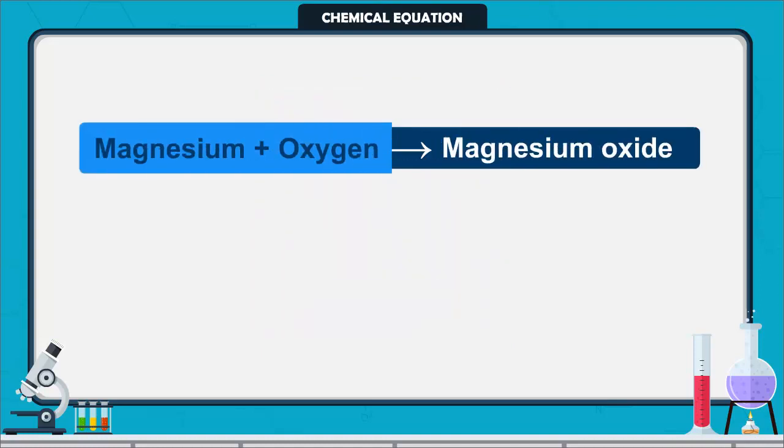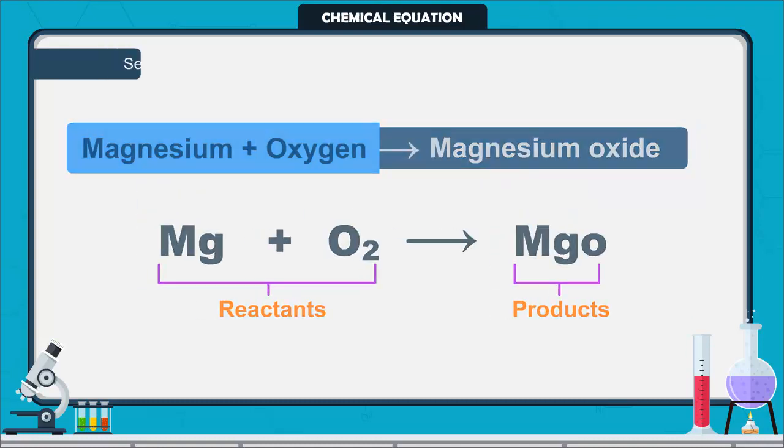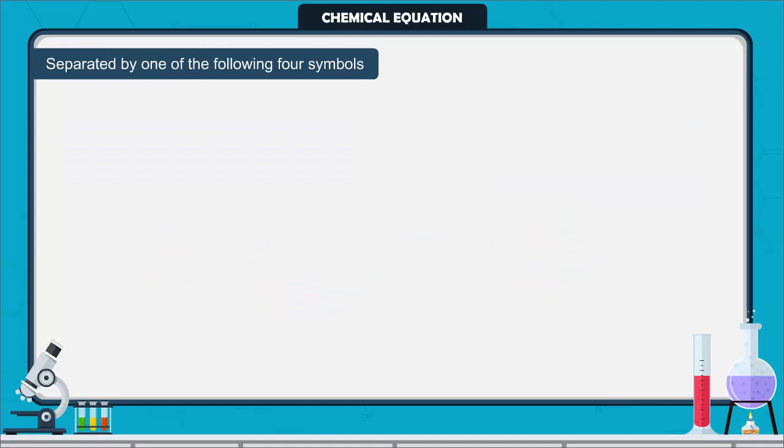If you recall formulae of magnesium, oxygen, and magnesium oxide, the above word equation can be written as... The reactants and the products can be separated by one of the following four symbols.